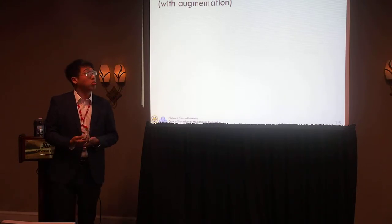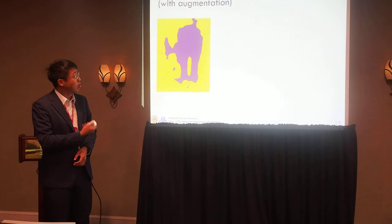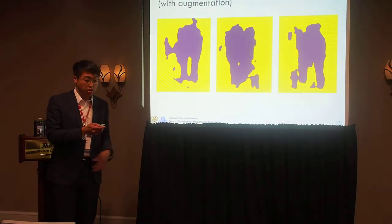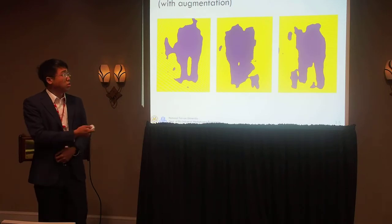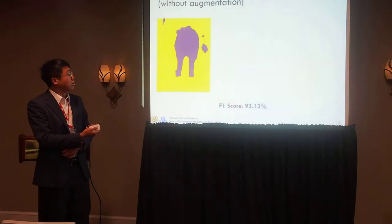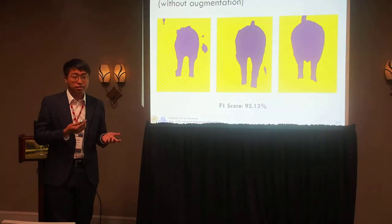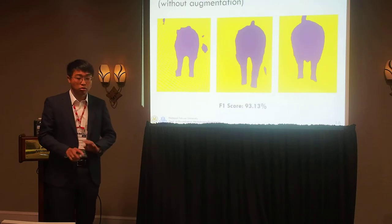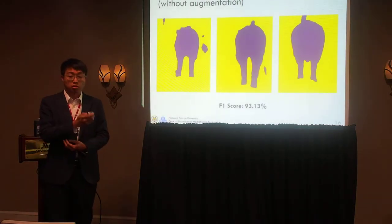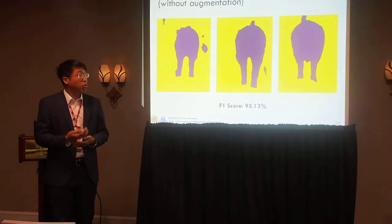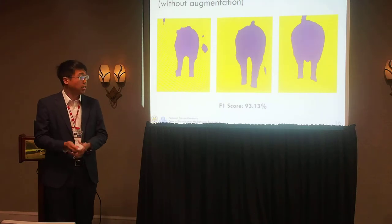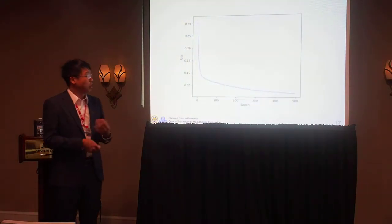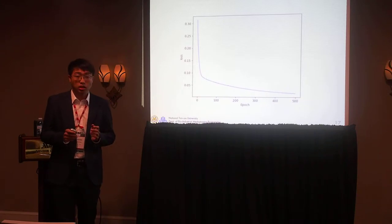I will show some results of segmentation with augmentation — and you can see that it is quite poor. This is the result with augmentation. I will also show results without augmentation, which give better results. This means my augmentation strategy has some problems, so I will use all results without augmentation going forward. My fully convolutional network for semantic segmentation of the sow body achieved an F1 score of 93%. After 500 epochs, the training loss converges to about 0.0015.